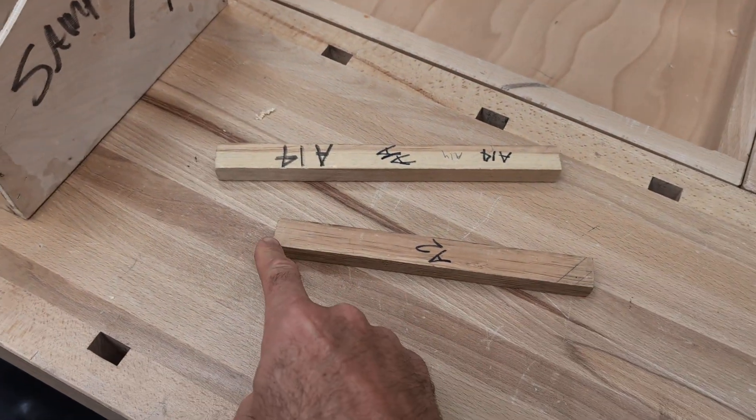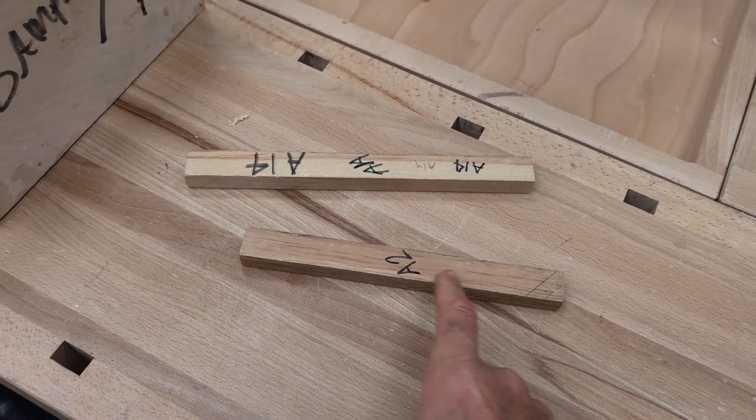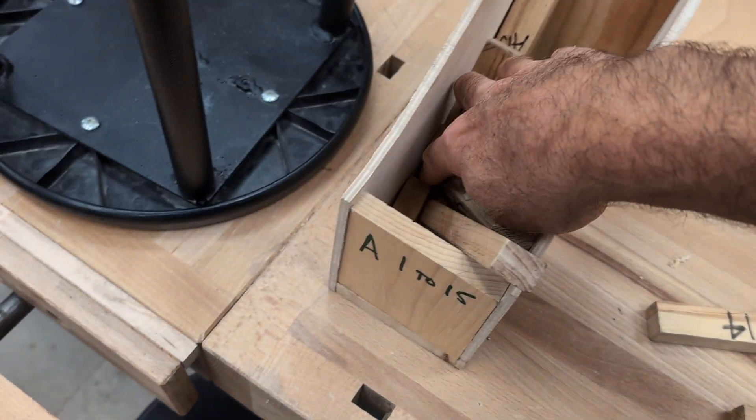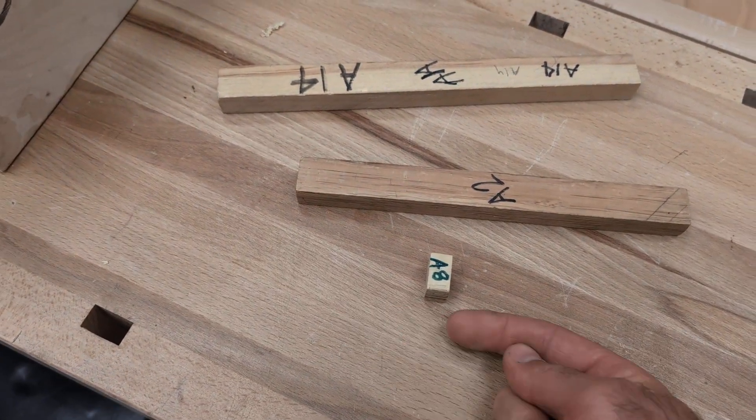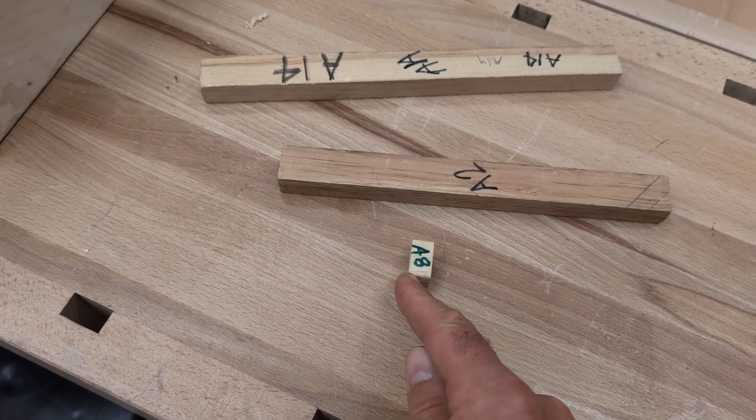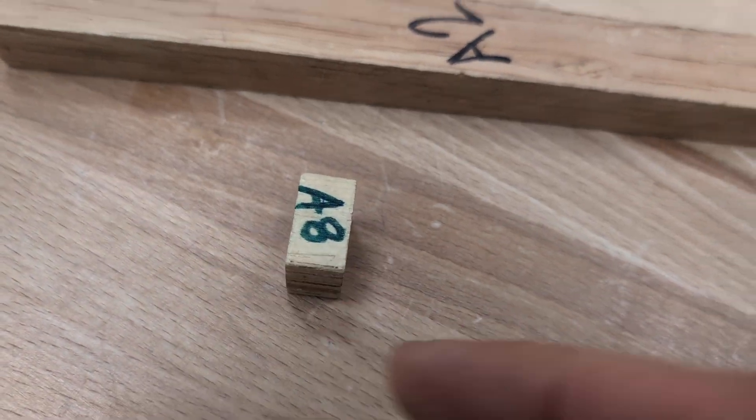You'll be measuring the length which is following the wood grain this direction. There's some tricky ones like this one. A8 you actually measure this direction. So it's short this way. That's the length. It has to do with the way that the wood grain is running.